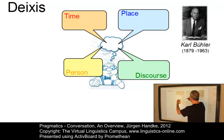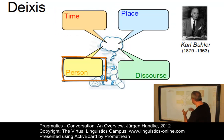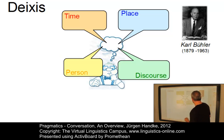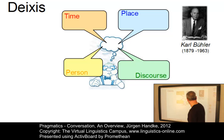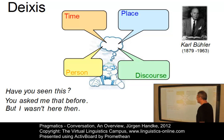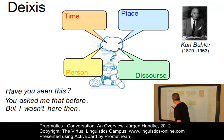The following deictic elements can be defined in conversation. We have deictic elements that relate to time, deictic elements that define the place, persons can be addressed by particular deictic elements such as pronouns, and last but not least, we have discourse deixis — elements like 'this' and 'that'. Here is a short dialogue between two speakers. The first one says, 'Have you seen this?' The second one answers, 'You asked me that before, but I wasn't here then.'